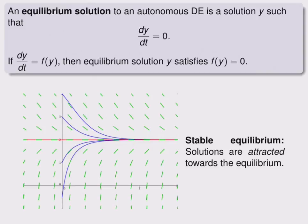If we plot several other solutions to these differential equations that are not equilibrium solutions, we can see that they're pulled towards the equilibrium solution. We call this a stable equilibrium, in which solutions are attracted towards the equilibrium.